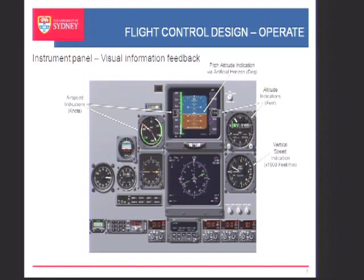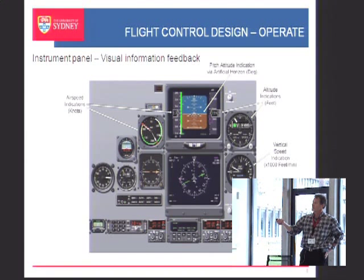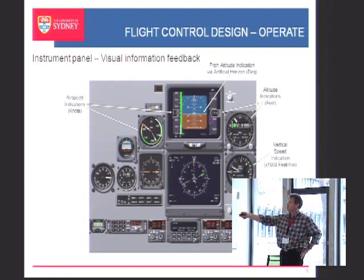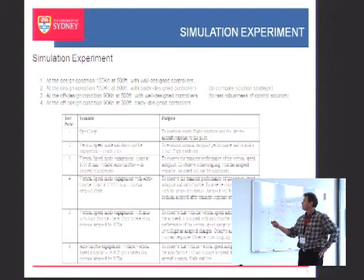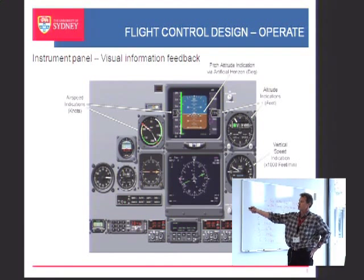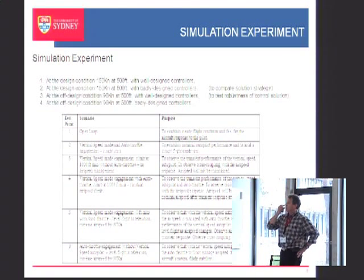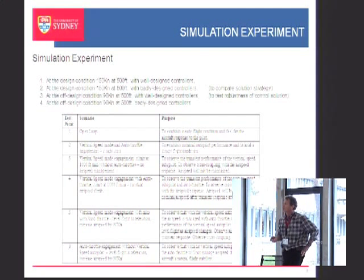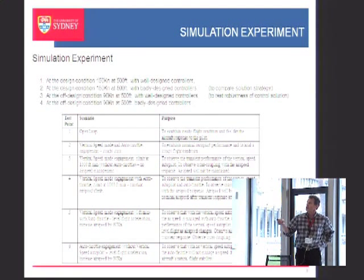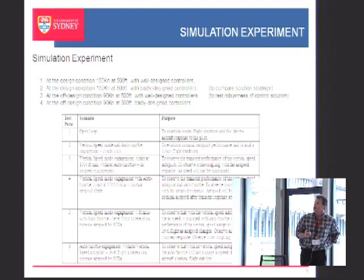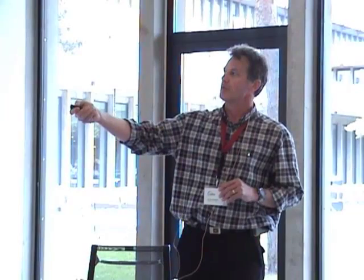They're also working with the autothrottle — the autothrottle arm and speed button allows them to get the system to follow a particular commanded speed. They're using gauges including airspeed indications on a standard analog gauge or digital outputs, and a vertical speed indicator showing how fast the airplane's climbing. They're looking for what the dynamic response is — whether the needle is oscillating or showing a nice smooth exponential convergence to the final value. We set them up in a design condition and an off-design condition where the airspeed is somewhat different, and look at a bad design in both conditions.